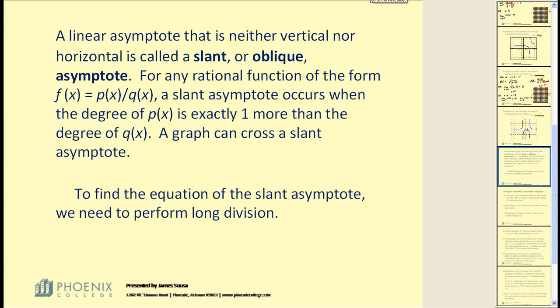Now, sometimes a function can have a linear asymptote that is neither vertical nor horizontal, which is called a slant or oblique asymptote. For any rational function of the form f of x equal to p of x divided by q of x, a slant asymptote occurs when the degree of p of x, or the numerator, is exactly one more than the degree of the denominator q of x. A graph can cross a slant asymptote. In general, to find the equation of a slant asymptote, we need to perform long division and then take the limit of that as x approaches positive or negative infinity.